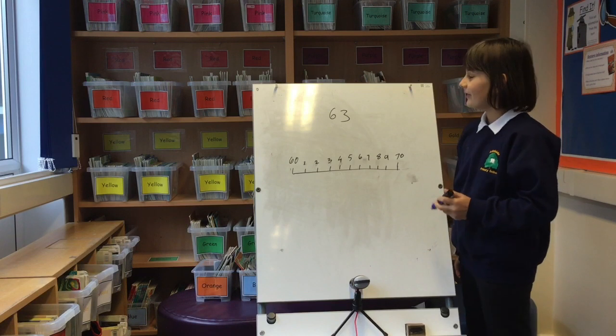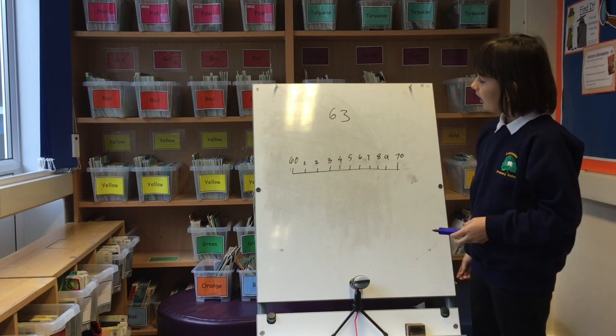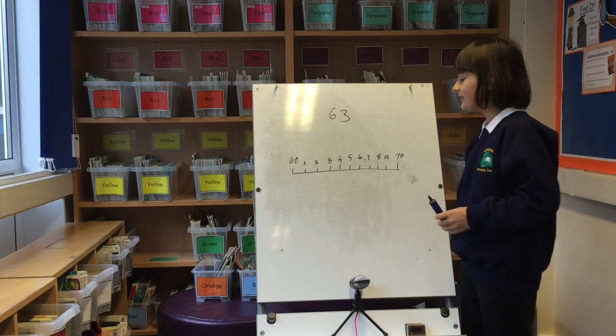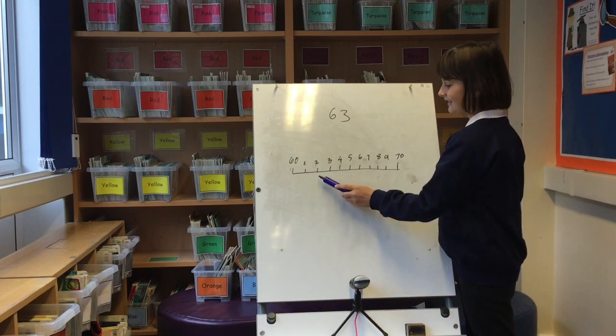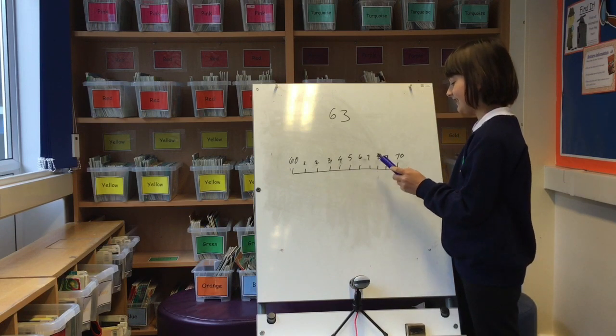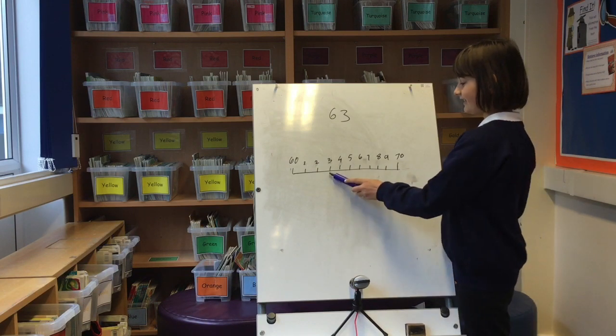I'm going to round to the nearest ten. This number is 63. We're going to use the number line: 61, 62, 63, 64, 65, 66, 67, 68, 69, 70. Here's 63.